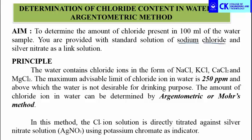The desirable limit of chloride content in drinking water is 250 ppm. If it exceeds this limit, it will not be desirable for drinking purpose. The amount of chloride ion in water can be determined using the Argentometric method, where 'argento' refers to measurement using silver. We are going to measure the chloride content by using silver nitrate, so it is called the Argentometric method.